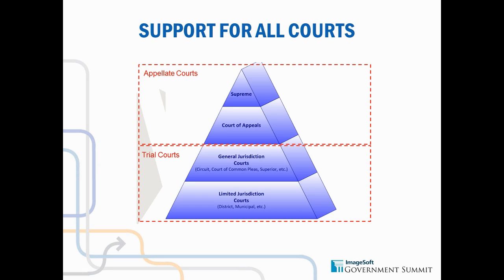One of the more important pieces of functionality is the communication between the different levels — the ability to send appeal cases up to the appellate courts or to send them back down to the local and general jurisdiction courts. Especially if all these different courts are using Justice Tech solutions, that communication becomes seamless.